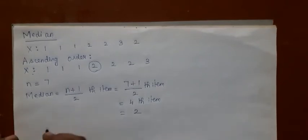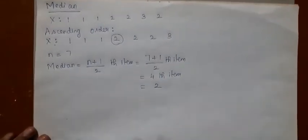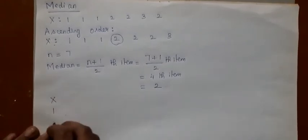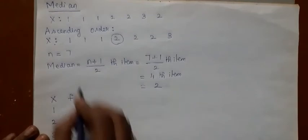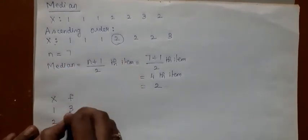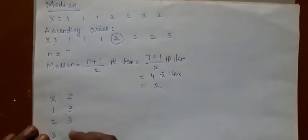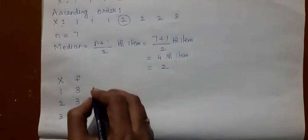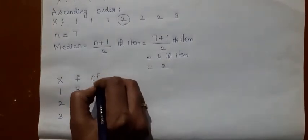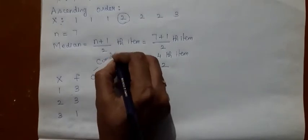Now let me convert this data into discrete series. That is, 1, 2, and 3 are the possible values. 1 occurs 3 times, 2 occurs 3 times, and the frequency of 3 is 1. With this data, how should you compute the median? Let us have a column called CF — cumulative frequency.